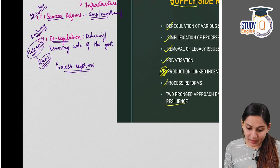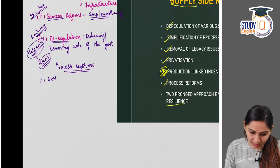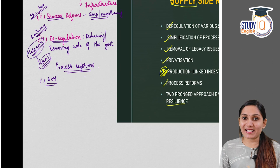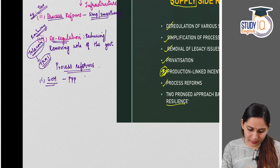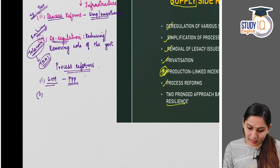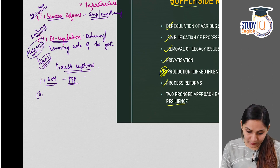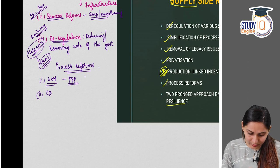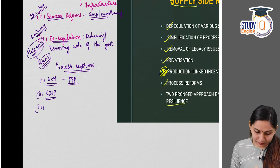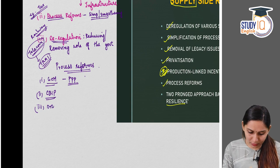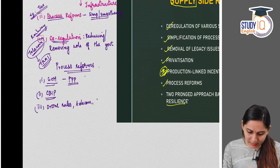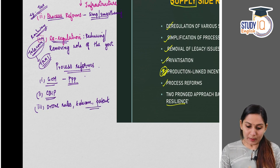Some examples of process reforms include: the launch of GeM — Government e-Marketplace — which is a process reform in public procurement policy. Another example is the simplification of the liquidity validation process for corporates and institutions under the cross-border insolvency process. Further examples include simplification of drone rules, reforms in the telecom sector, and reforms in patent applications. All these can be said to be process reforms.